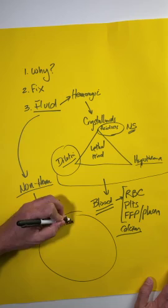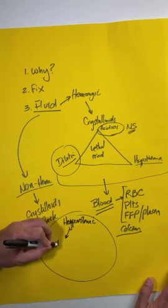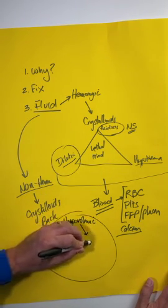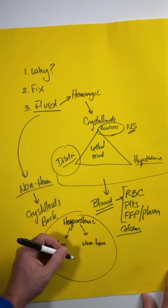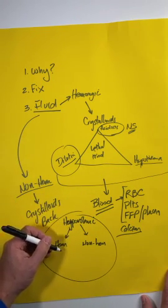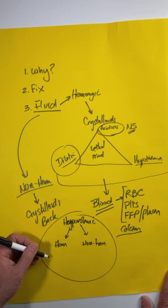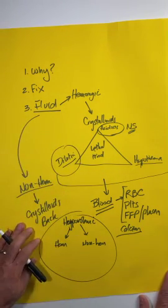When you have someone who is having hypovolemic shock, ask the question if it's hemorrhagic or non-hemorrhagic. Ask the question of why that's happening. Try to fix that problem, and then give them the appropriate fluid that they need as you're fixing that person's problem.